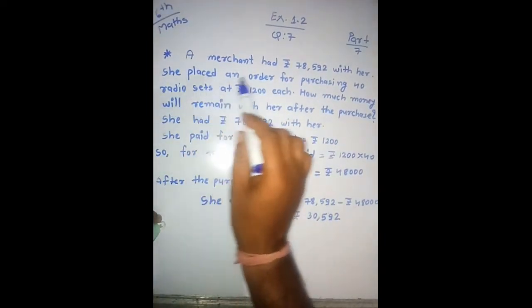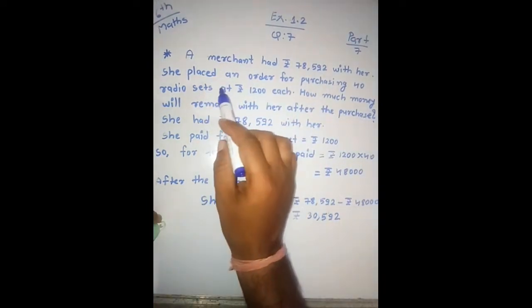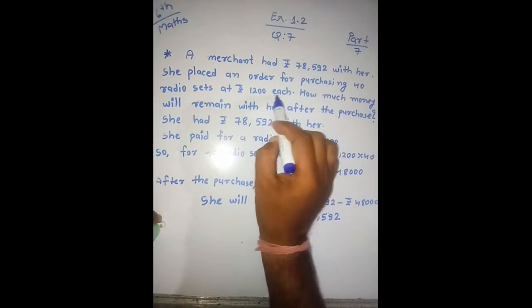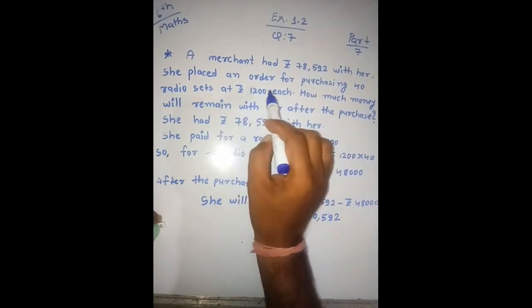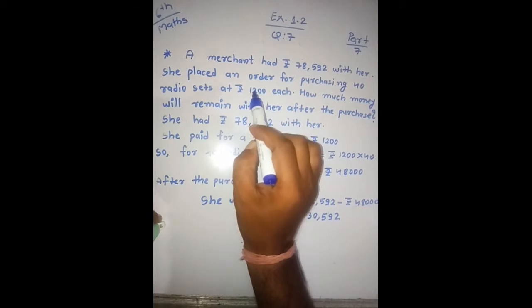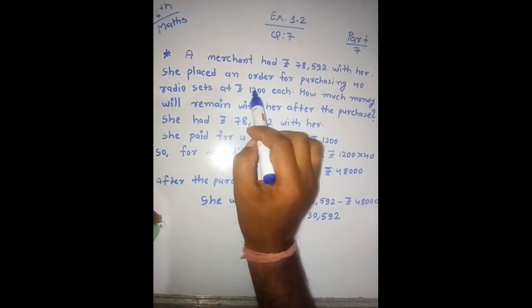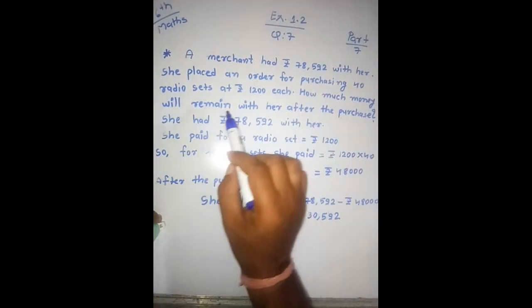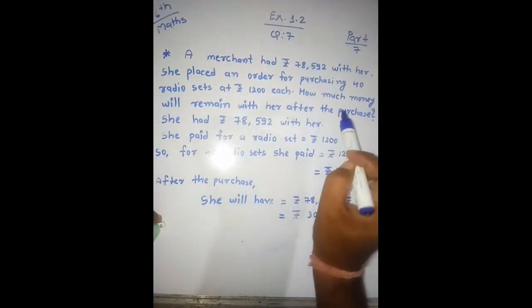Isne jo hai ek order diya 40 radio set ko kharidne ka, aur har ek radio ki jo price hai woh hai rupees 1200. Means ek ko 1200, 1200 karke isne 40 radios kharidi. How much money will remain with her after the purchase?